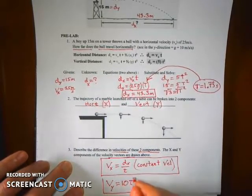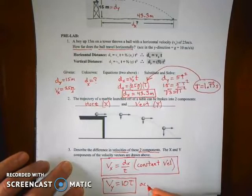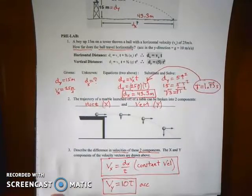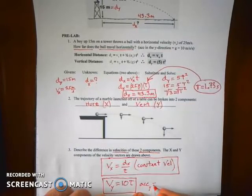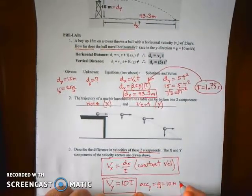So you can solve for the y component of its velocity by just saying simply 10 times t. Because that tells you the velocity increases by 10 meters per second each second. So this is acceleration in the y direction. And we call that acceleration in the y direction g, which is approximately 10 meters per second squared.